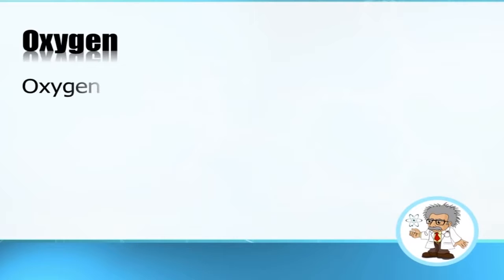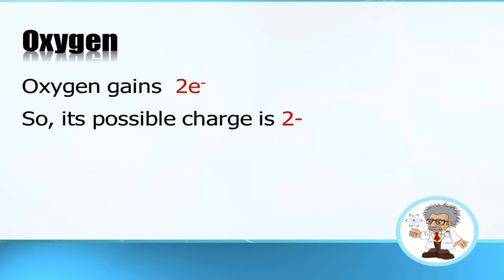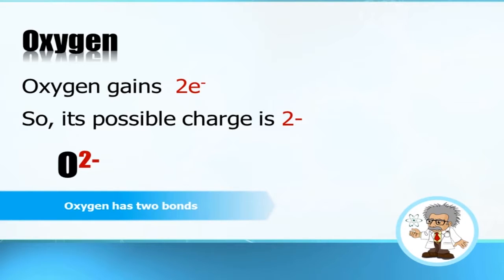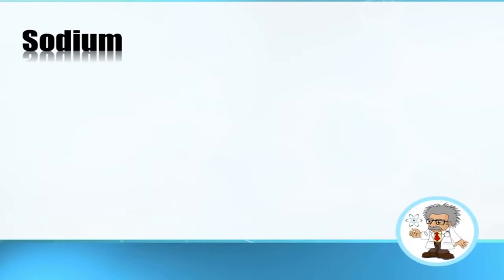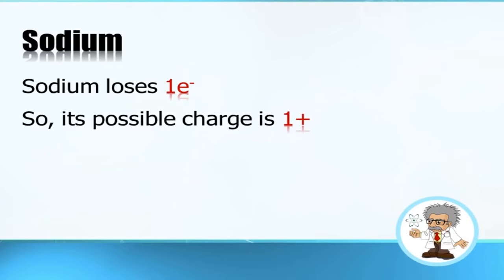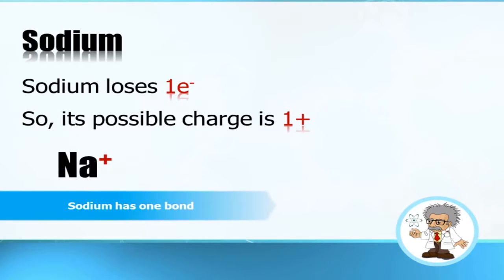Oxygen gains two electrons, as we established from the periodic table. Therefore oxygen's possible charge is two negative, and we write its anion as such. Once you know the charge, you also know how many bonds the element usually makes. Sodium loses an electron, so its possible charge is plus one — that is its cation, and sodium forms one bond.